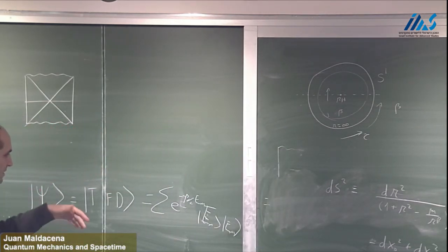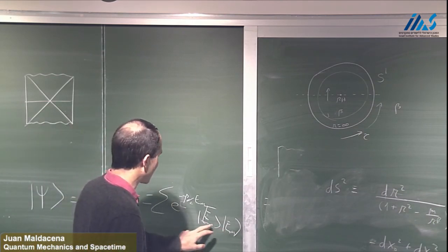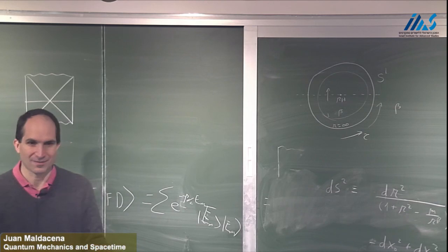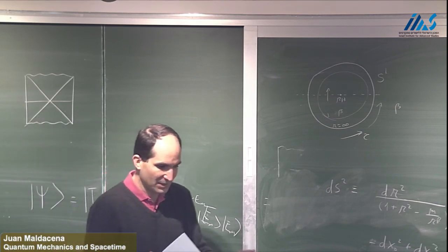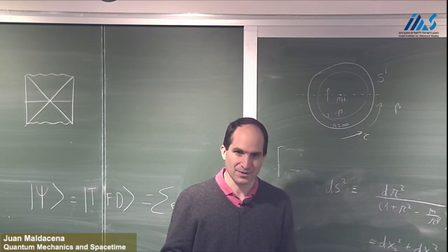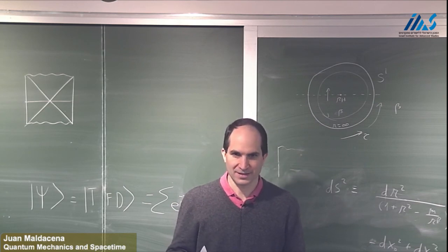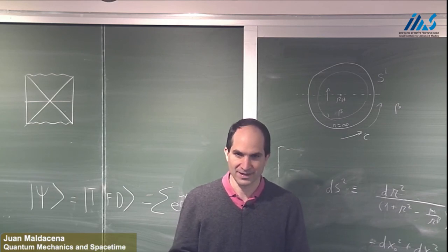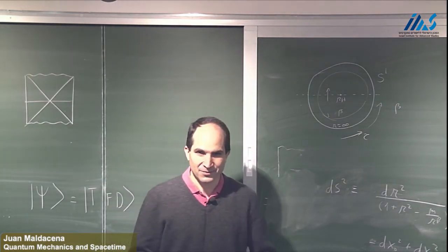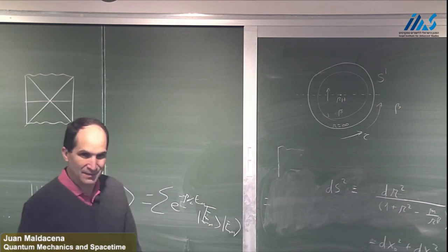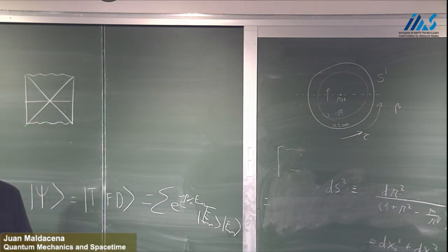We use the AdS-CFT correspondence to assert what these states are, because from the bulk description alone we don't have a very explicit description of the black hole microstates. The boundary description gives an explicit description: they are the corresponding microstates of the dual field theory. In a complete theory of quantum gravity we would also have a bulk description of the black hole microstates.